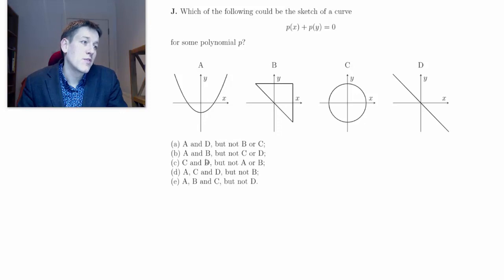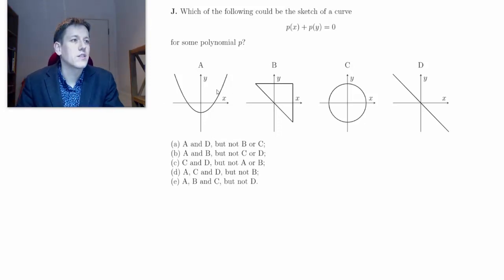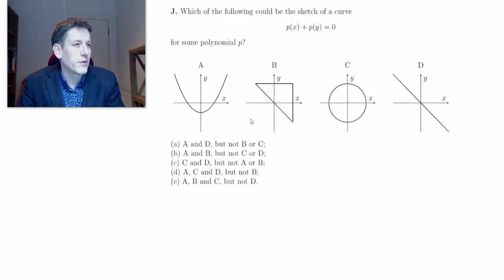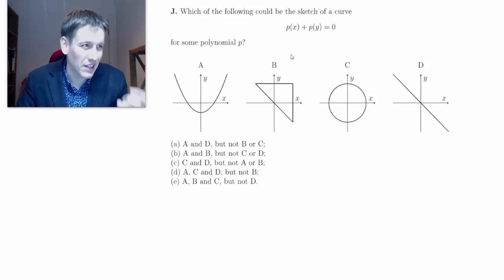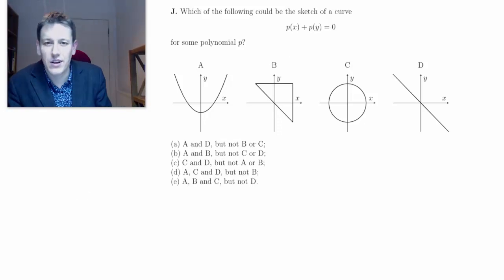We've also got some options down here and we might use those in conjunction with the sketches. Looking across here, I first just think about what's plausible. I think when I first looked at this I would just say, well, obviously not b - it's just not the sort of thing we're going to get from adding polynomials together like this. So I'll start by thinking about the other ones.